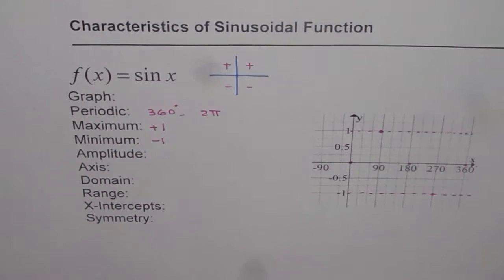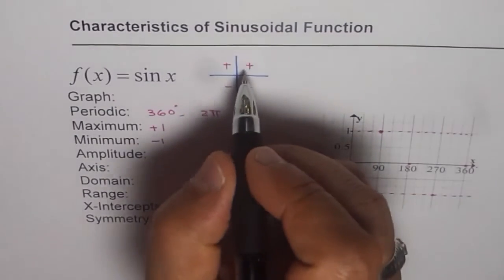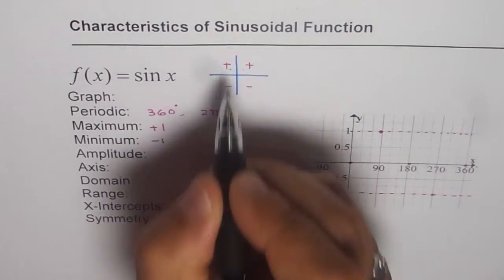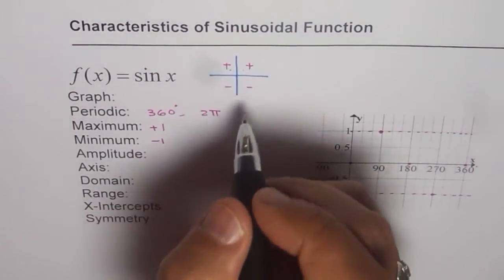That means coordinates 1 and 2, sin is positive. So some of you who use all silver teacup, all are positive, silver means sin, teacup or cast rule.